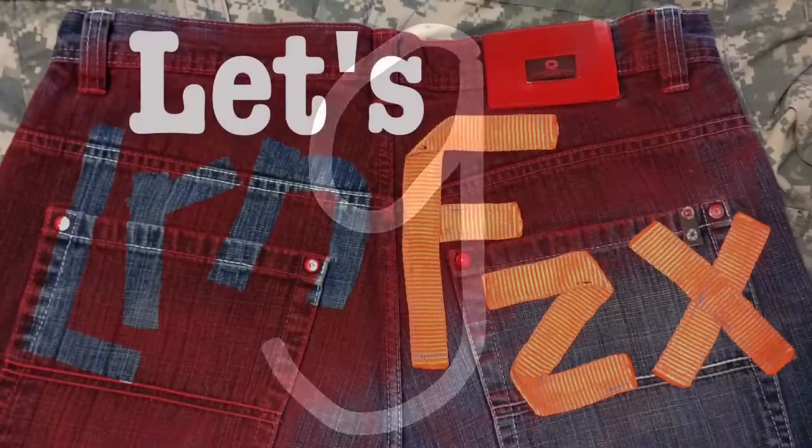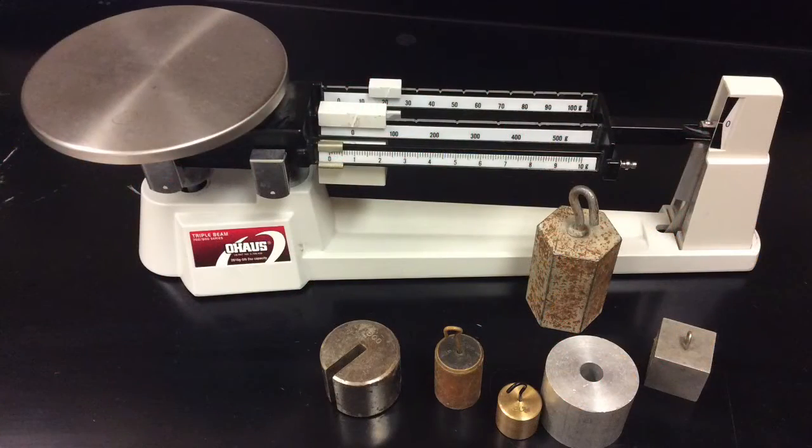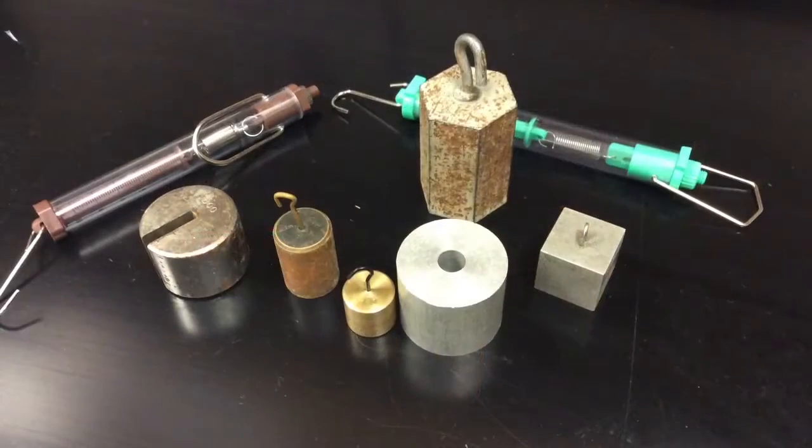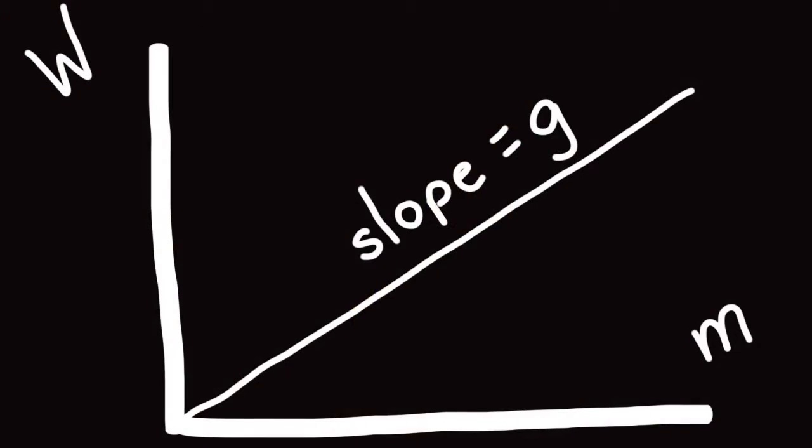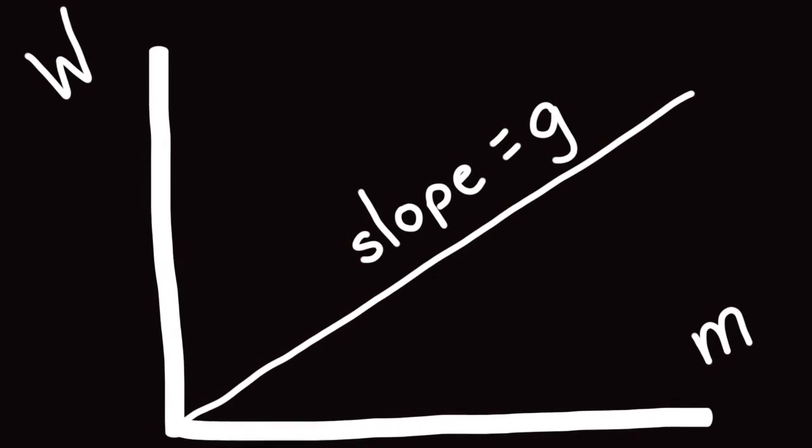All about little g. Let's learn physics. If you use a balance to find the mass of a bunch of different objects, and then a scale to find their weights, you can graph the weight versus the mass. Here at the surface of Earth, the slope of that graph will be g.